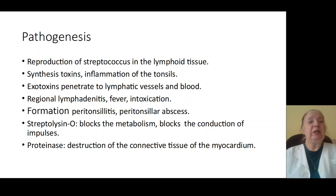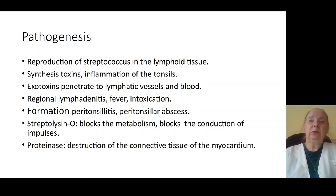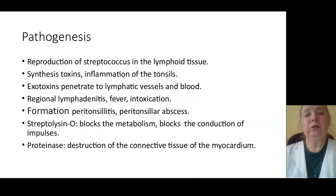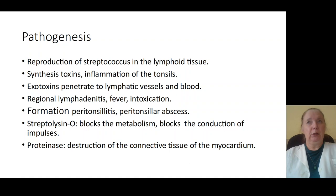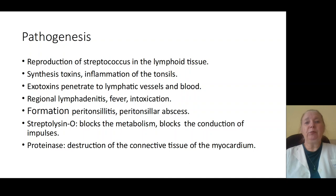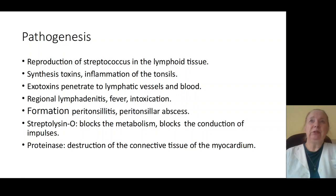Streptolysin O of streptococcus blocks metabolism of tissue and blocks the conduction of nerve impulse. The antigenic structure of exotoxins resembles that of streptococcal proteins, so antibodies to those bacteria cause destruction of different organs, formation of autoantibodies and target organ damage. Proteins of different organs of the patient resemble the antigen structure of streptococcus.